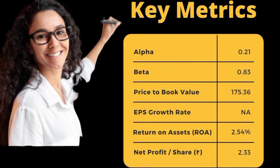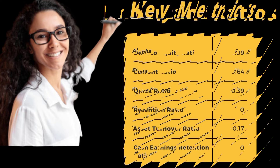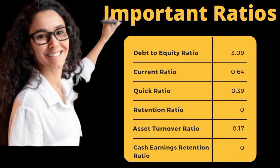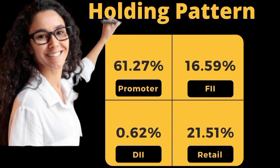Earning per share growth rate: nil. Return on assets: 2.54 percent. Net profit per share: 2.33. Important ratios — debt to equity ratio: 3.09, current ratio: 0.64, quick ratio: 0.39, retention ratio: zero, asset turnover ratio: 0.17, cash earnings retention ratio: zero. Shareholding pattern — promoters: 61.27 percent, foreign individual investors: 16.59 percent.